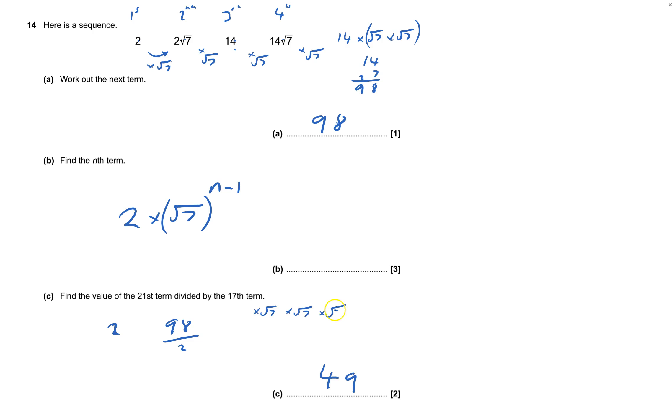To go from the 17th, I'd have to times it by root 7, then times it by root 7 to get the next one, then times by root 7 to get the next one, and then times by root 7 to get the next one. That's the 17th, 18th, 19th, 20th, 21st. So if I times by that, that's 7 times by 7, that's 49. So divide, and that's question 14 done - that's 49.